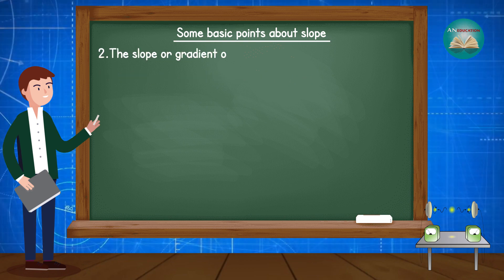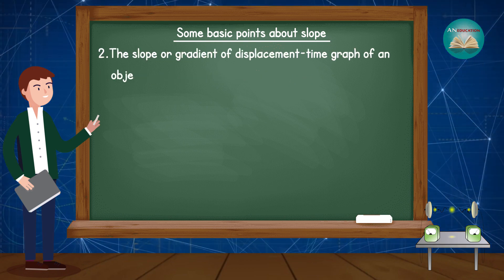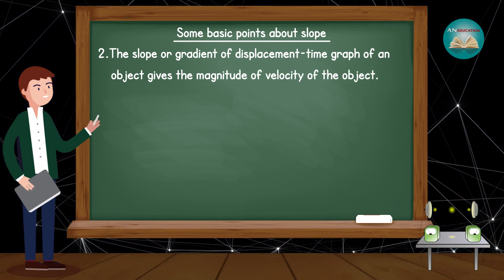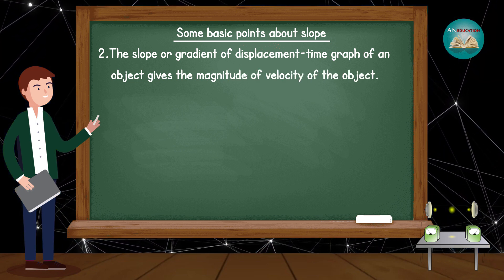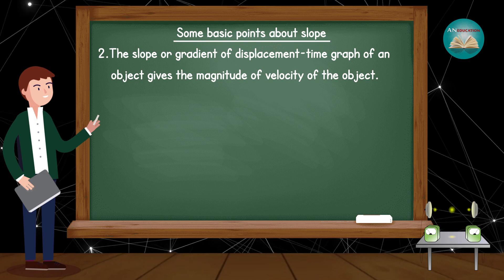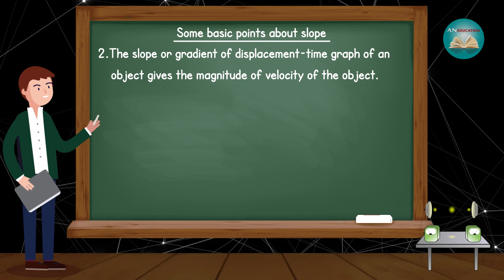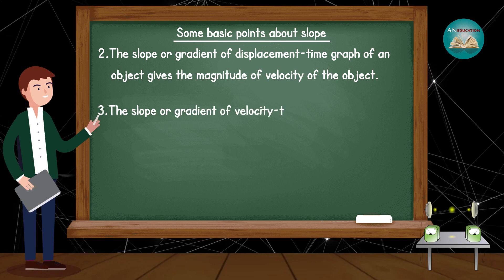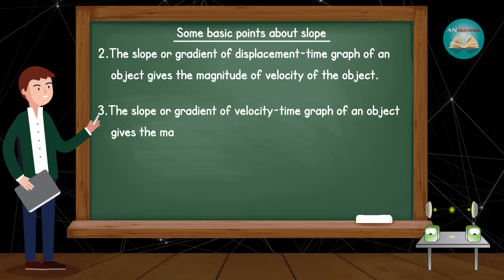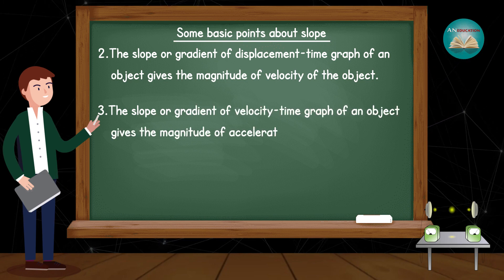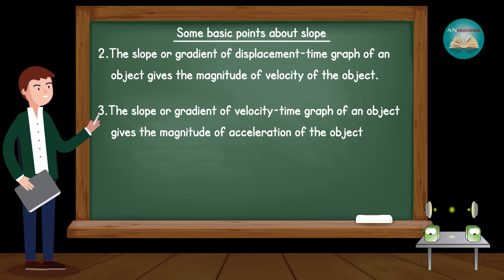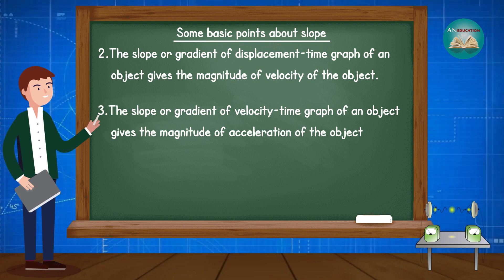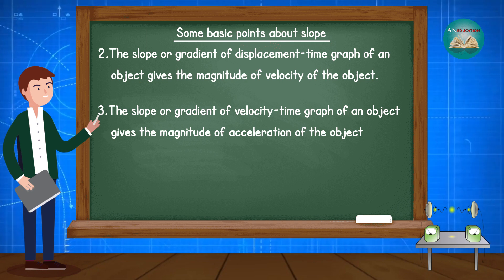The slope or gradient of a displacement-time graph gives the magnitude of the velocity of the object. This means finding the slope of a DT graph gives velocity. The slope or gradient of a velocity-time graph gives the magnitude of the acceleration of the object. This means finding the slope of a VT graph gives acceleration.